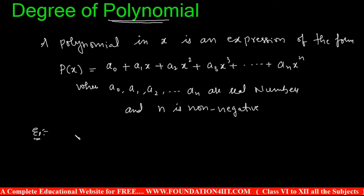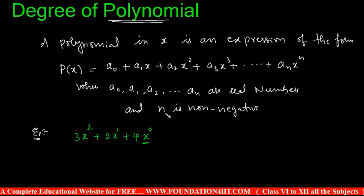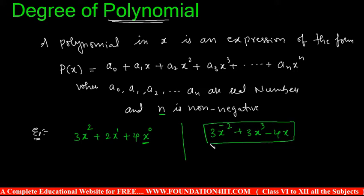For example, 3x² + 2x + 4. Here x has power 2, then power 1, and the constant 4 is x to the power 0 — since x⁰ = 1. So 3, 2, 4 are real numbers and powers are non-negative. However, 3x⁻² + 3x³ − 4x is NOT a polynomial because the power is negative — power must always be non-negative.